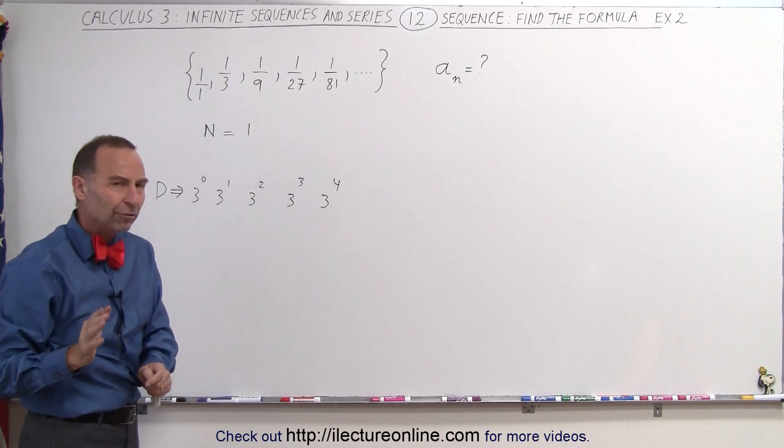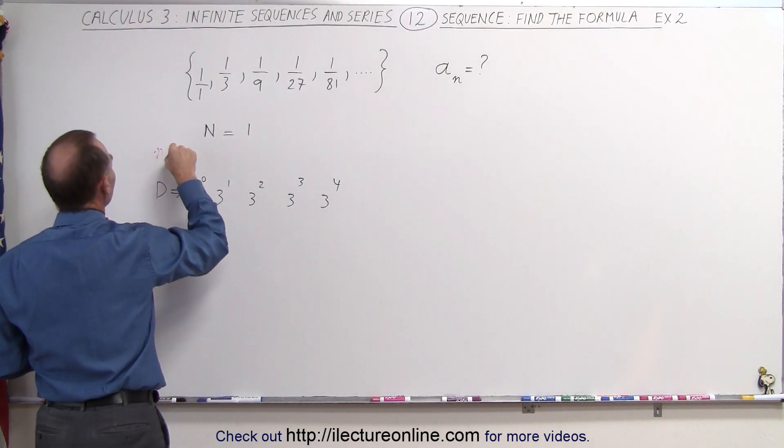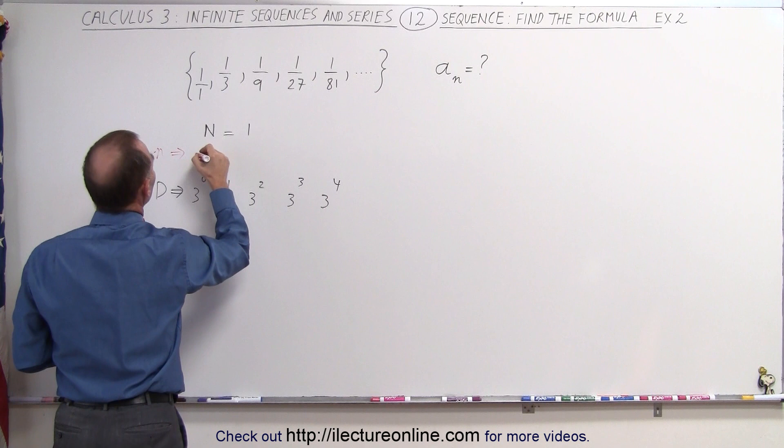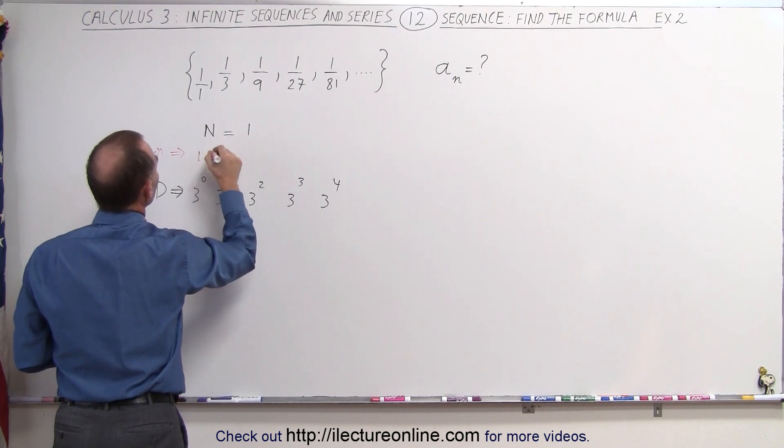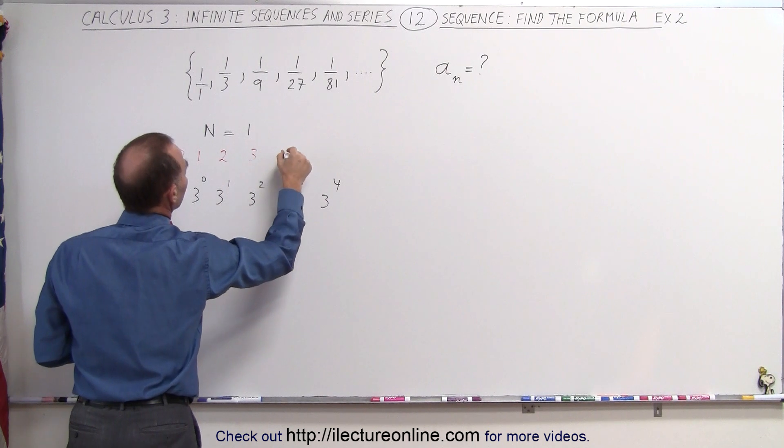So we then compare that to the value of n. So let's do that over here. We can see that for the first element, the value of n is equal to 1. And here it's equal to 2. There it's equal to 3, to 4.